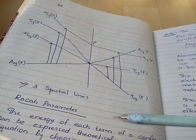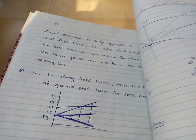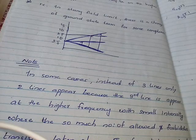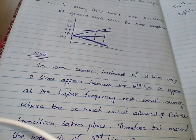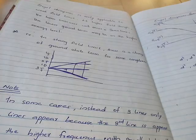Three spectral lines occur in these transitions. Sometimes we see only two spectral lines instead of three because of small intensity — at higher frequency the intensity becomes smaller. In the strong field region some allowed and forbidden transitions take place, so the intensity becomes smaller at higher frequency and instead of three lines we observe only two lines.